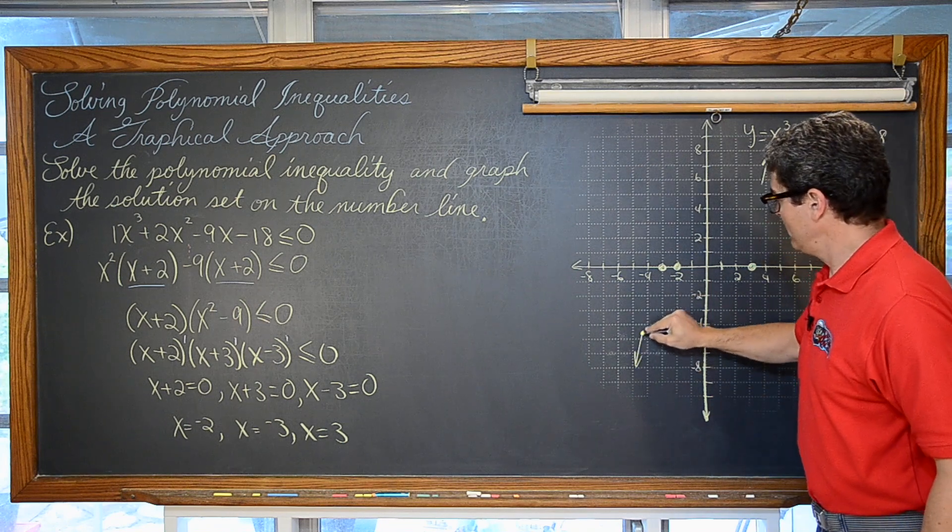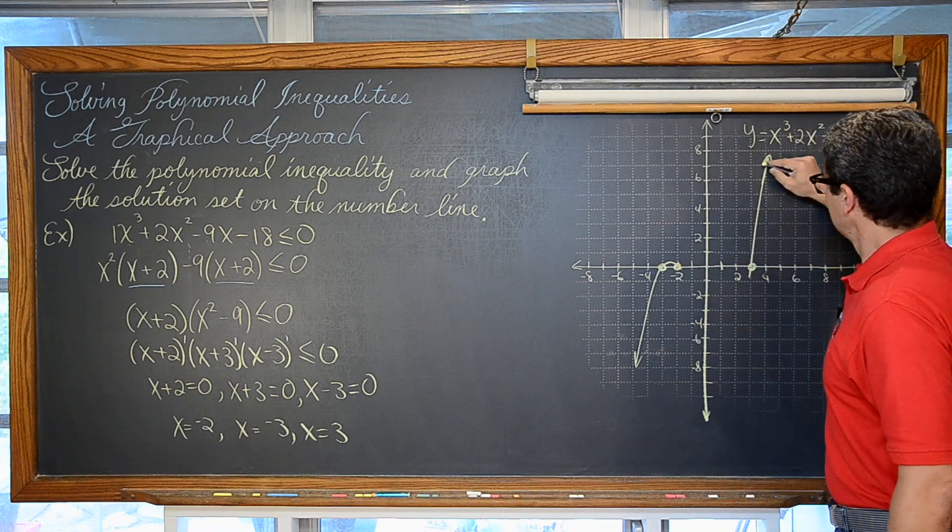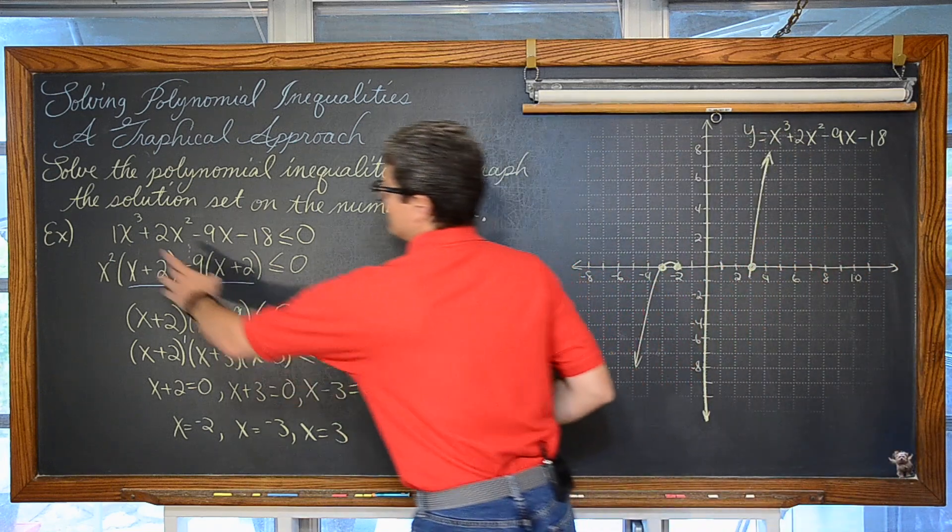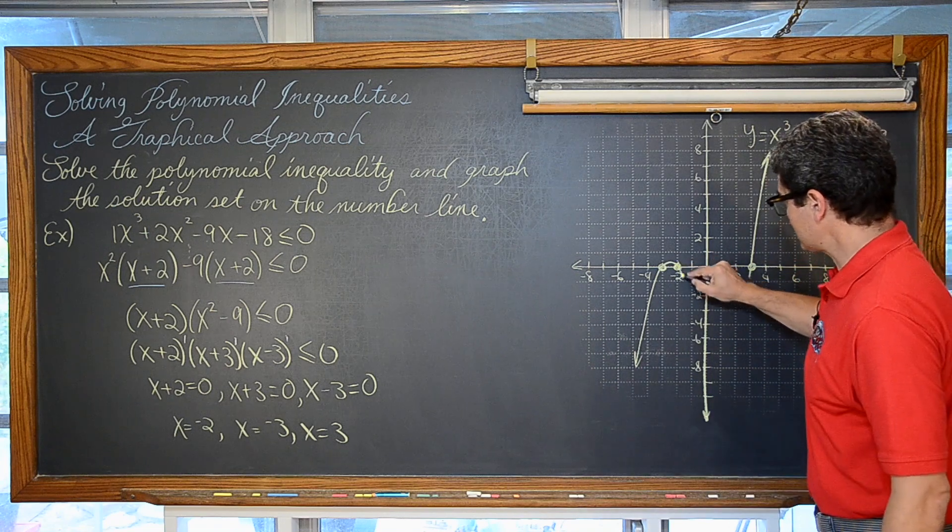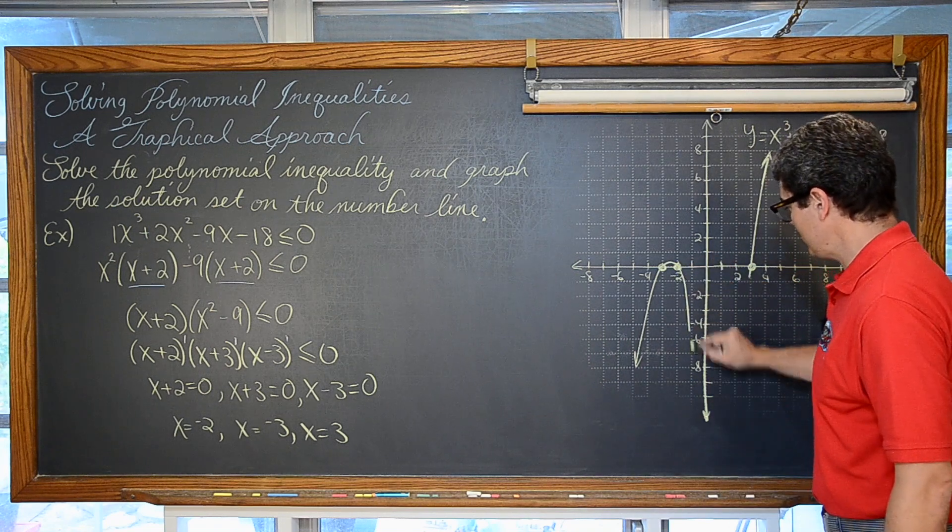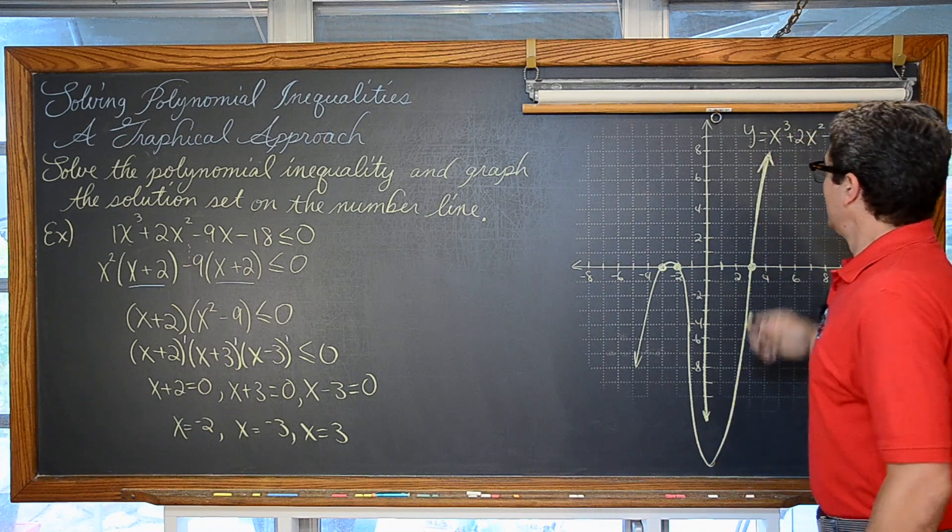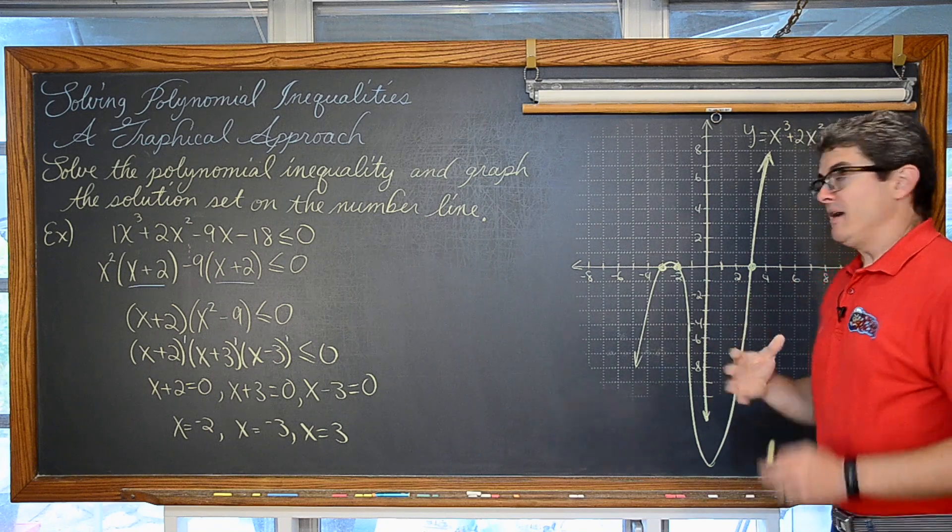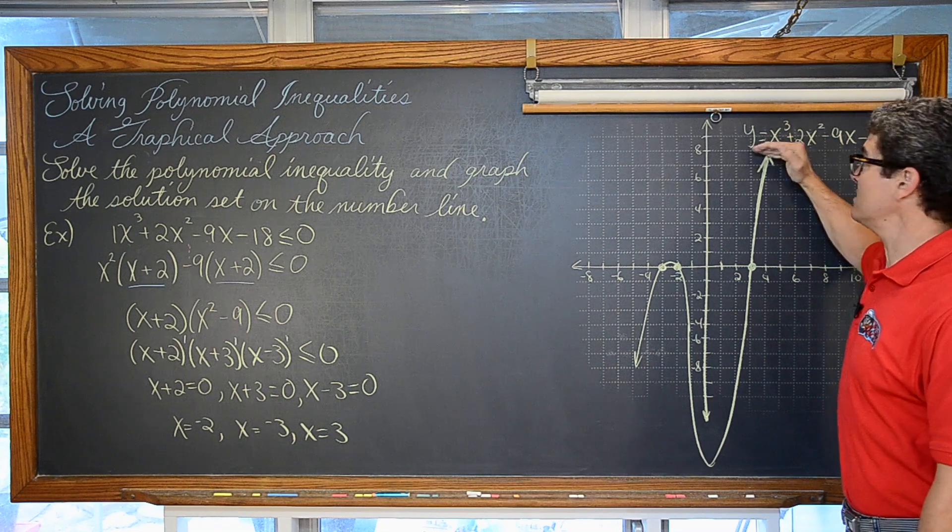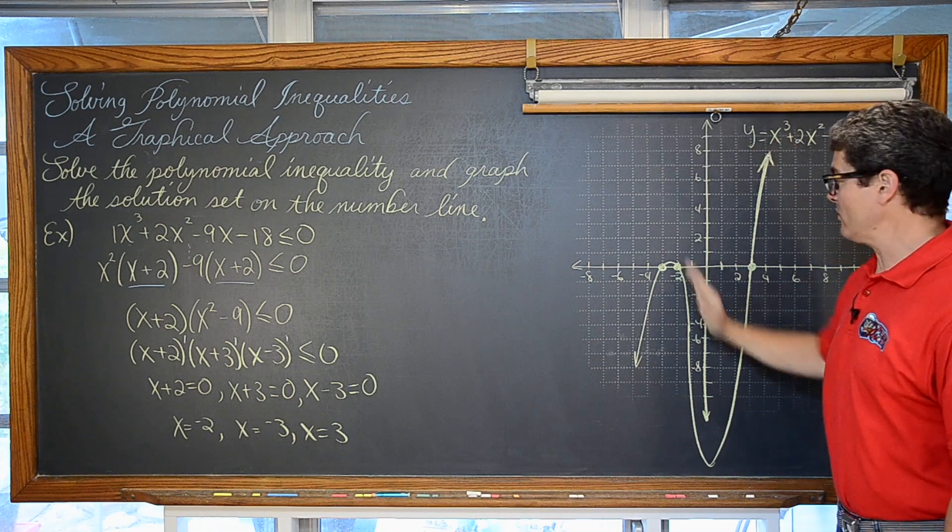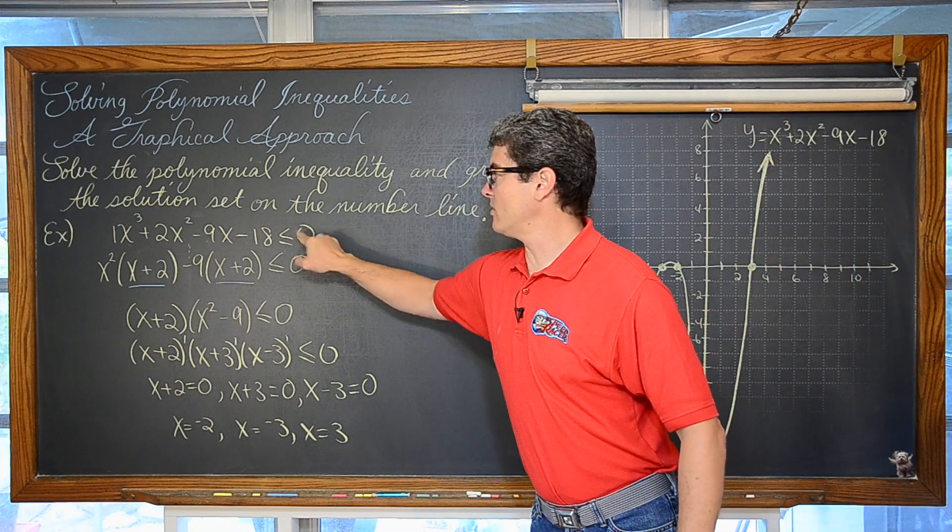Now I guess it doesn't take too long. If x is equal to 0 then my y intercept is negative 18 which isn't even on my chalkboard here. But the graph is coming down. It is going to come down somewhere down there at negative 18 and come up through x equals 3. Now in terms of graphs, this expression, the whole x cubed plus 2x squared minus 9x minus 18 is giving our values of y if we were graphing. So where along this graph are my y values less than or equal to 0?